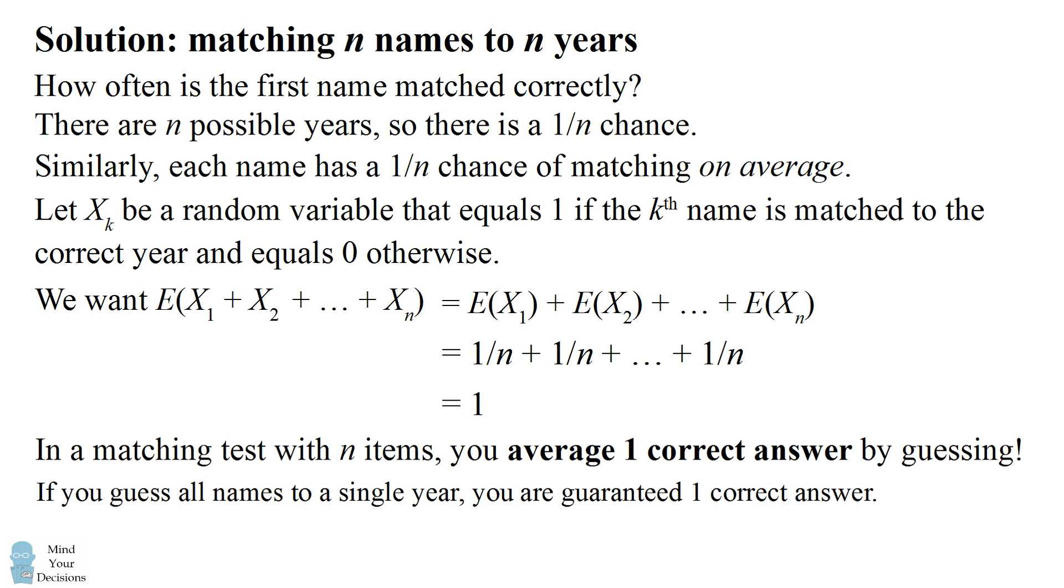So one way is imagine you guess each name to all of the names to a single year. You say all of your choices just go to the first year. You're guaranteed obviously one correct answer because one of the mathematicians you'll get to the correct year. So what's interesting about this method is that your average is going to be 1 but you're always going to get that one correct answer. You're also going to get all the other answers incorrect.